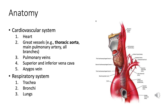Vital structures of the cardiovascular system within the thoracic cavity include the heart, great vessels (thoracic aorta, main pulmonary artery, and branches), pulmonary veins, superior and inferior vena cava, and the azygous vein — responsible for draining blood from the thoracic and upper abdominal wall to the superior vena cava. Respiratory structures include the trachea, bronchi, and lungs.